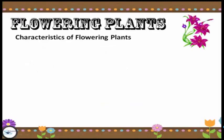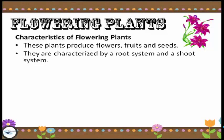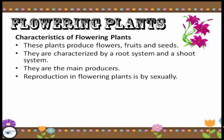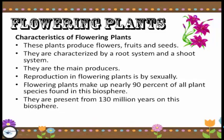Flowering plants have their characteristics. First, these plants produce flowers, fruits and seeds. Second, they can be characterized by a root system and a shoot system. They are the main producer — they produce the food required by all living organisms in the ecosystem. Reproduction in flowering plants is bisexual. Flowering plants make up nearly 90% of all plant species found in the biosphere, and they have been present for 130 million years.